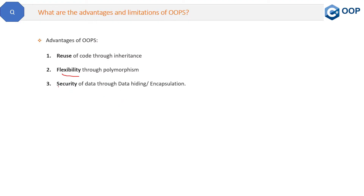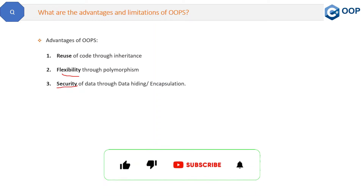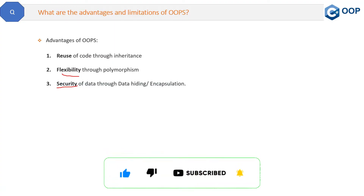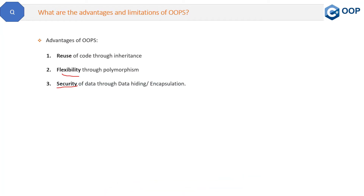The next advantage is security of data through data hiding and encapsulation. Your fields and data are not accessible directly outside the class. Properties are there to create a wrapper over fields and make them secure. That is the advantage provided by encapsulation.